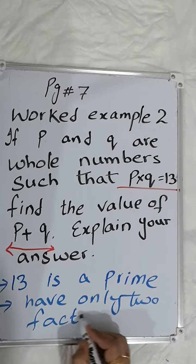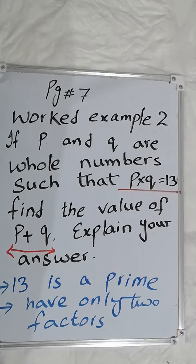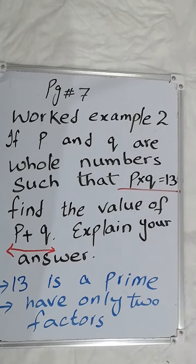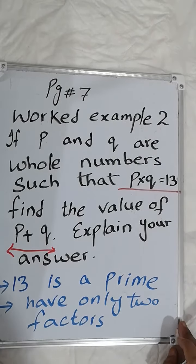Which two factors is it having? A prime number always has two factors: one and the number itself. So it has only two factors, 1 multiply 13.